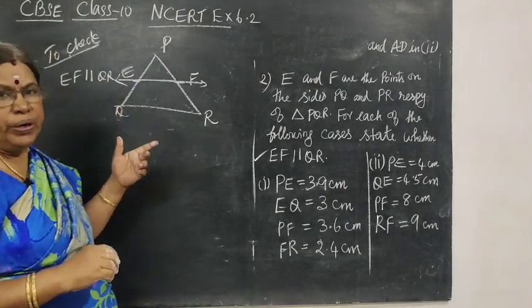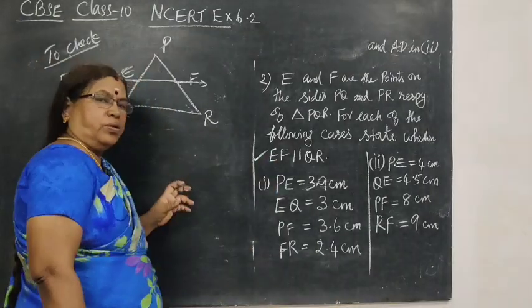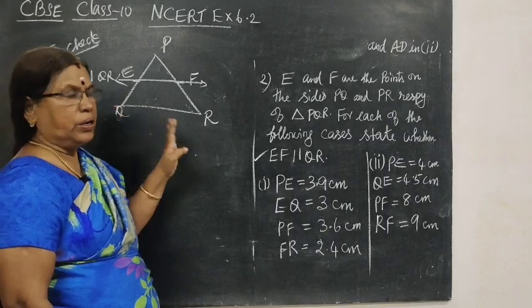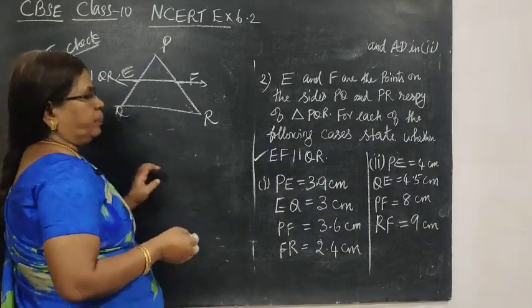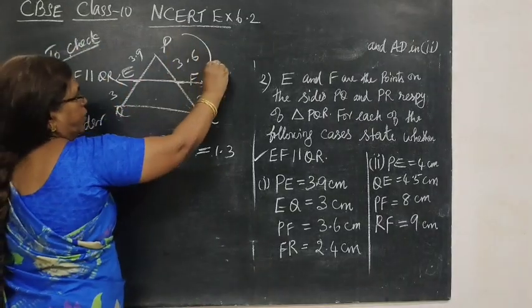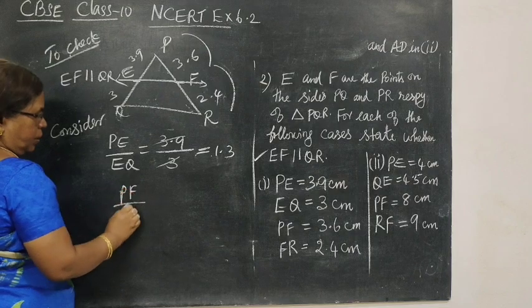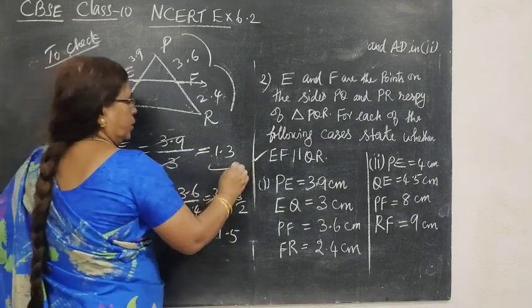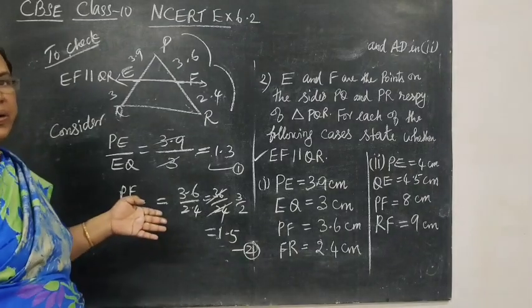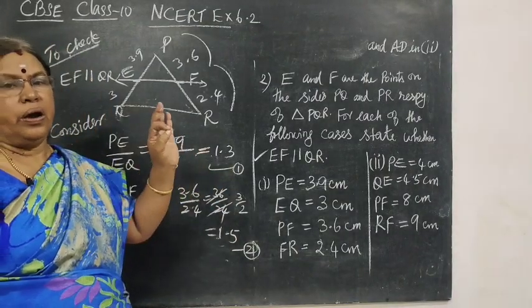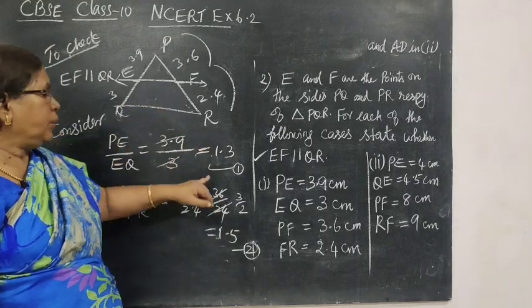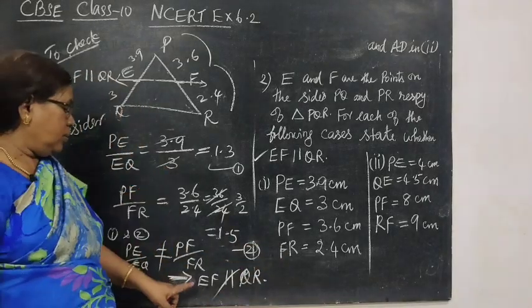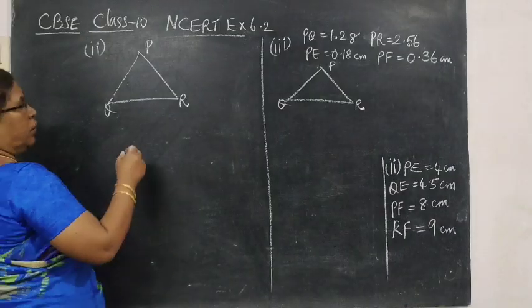For that, we are using converse of BPT. Converse of BPT means if the ratios are equal, then by converse of BPT these two lines are parallel. For this, we are using converse of BPT. PE by EQ, PF by FR. 3.9 by 3, equal to 1.3. PF by FR, 3.6 equal to 1.5, math says 1 to 2. The ratios are not equal. Not equal, by converse of BPT, not parallel to QR.